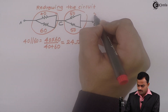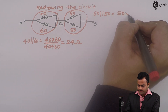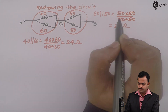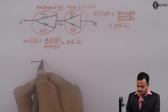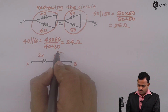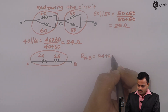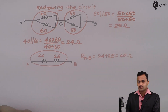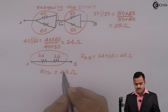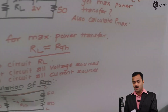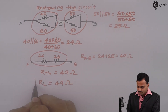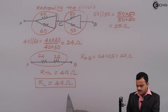Similarly, 50 parallel 50 gives 50 multiplied by 50 divided by 50 plus 50, and the answer is 25 ohm. So I get 2 resistances — 24 ohm and 25 ohm — connected between points A and B, giving R_AB equal to 49 ohm. Therefore, the Thevenin's equivalent resistance between points A and B is 49 ohm. As per the condition of maximum power transfer theorem, RL should equal RTH, so to get maximum power, RL should have the value 49 ohm.